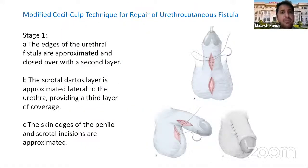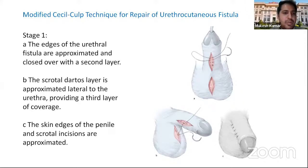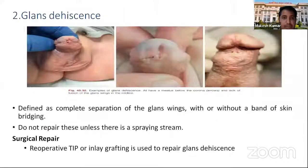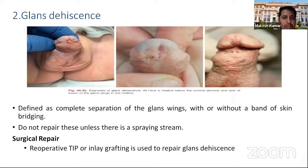For proximal or mid-shaft fistula repair, the outline of incision is marked; epithelium is removed from all areas except the central plug to be used to resurface the urethra. A dermal flap carrying the epidermal plug is elevated and the epidermal plug is sutured into the urethral epithelium. The dermal flap is sutured to subcutaneous tissue and skin closure is accomplished with a flap or simple approximation. The modified Cecil-Culp technique for fistula closure is performed in two stages: in stage one, the edges of the urethral fistula are approximated and closed, the dartos layer provides a third coverage layer, and the penile and scrotal skin edges are approximated. In stage two, the skin between penis and scrotum is separated and covered.